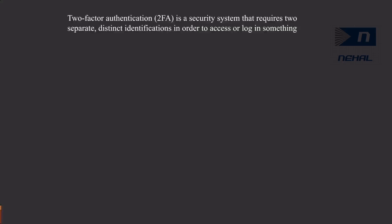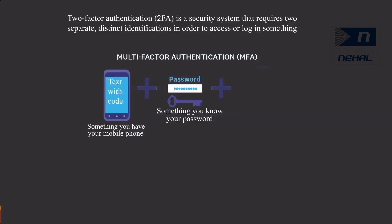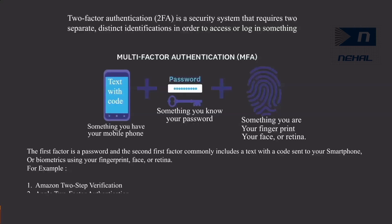Two-factor authentication requires two separate, distinct forms of identification in order to access or log into something. The first factor is a password — this is something you know. The second factor commonly includes a text with a code sent to your smartphone or smartwatch, or biometrics using your fingerprint, face or retina scan.